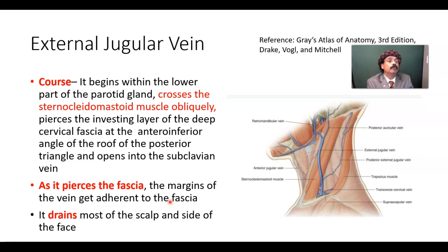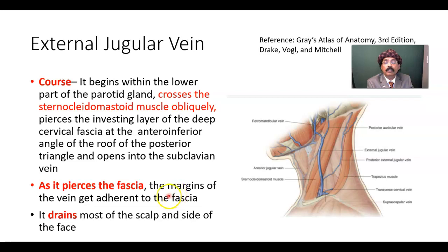So it may not close in case of injury to the external jugular vein, because the edges of the external jugular vein are connected to the fascia. Therefore there may be a chance of air embolism.